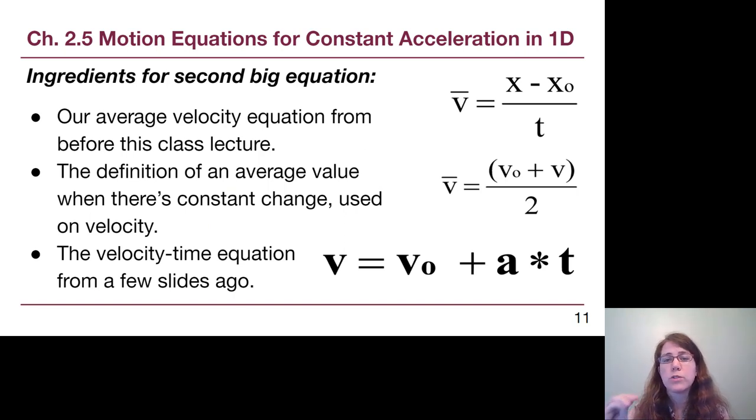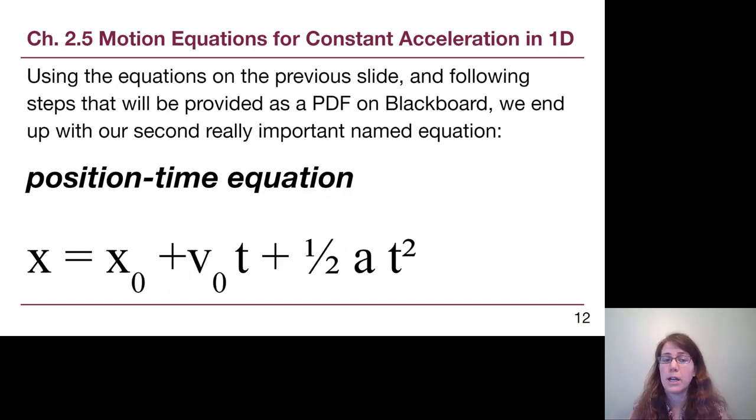So the pieces that go into our second big equation, and as a reminder, we're going to show you how these pieces work together to build the new equation in a posted PDF on our Blackboard site. But the ingredients that we're going to be using is, we start with our average velocity equation from the first half of Chapter 2, the definition of an average value when there's constant change, so the new ingredient that I just presented, and the velocity-time equation that we built a couple of slides ago. When we put those all together, it's kind of like watching a cooking show, and they've got all of their ingredients laid out in beautiful glass bowls. When we put all these ingredients together, we end up with the position-time equation.